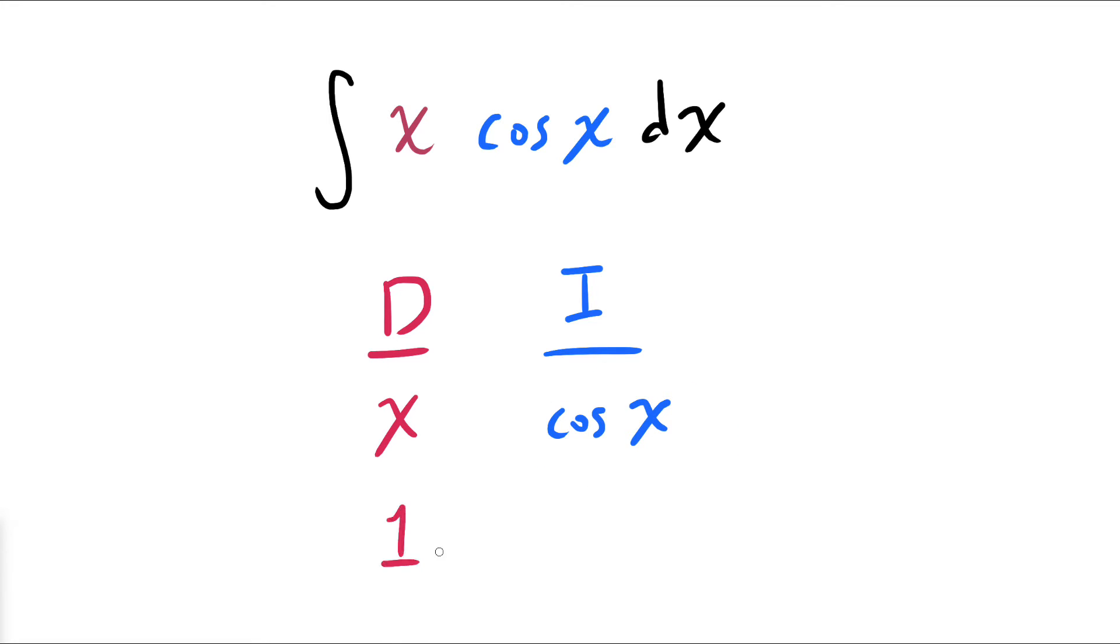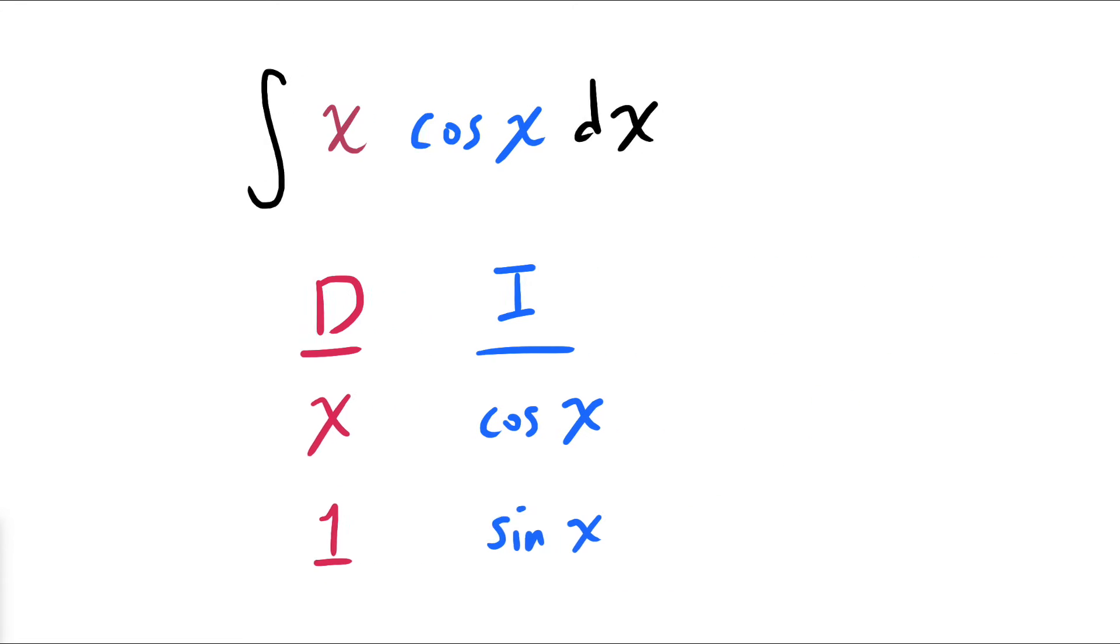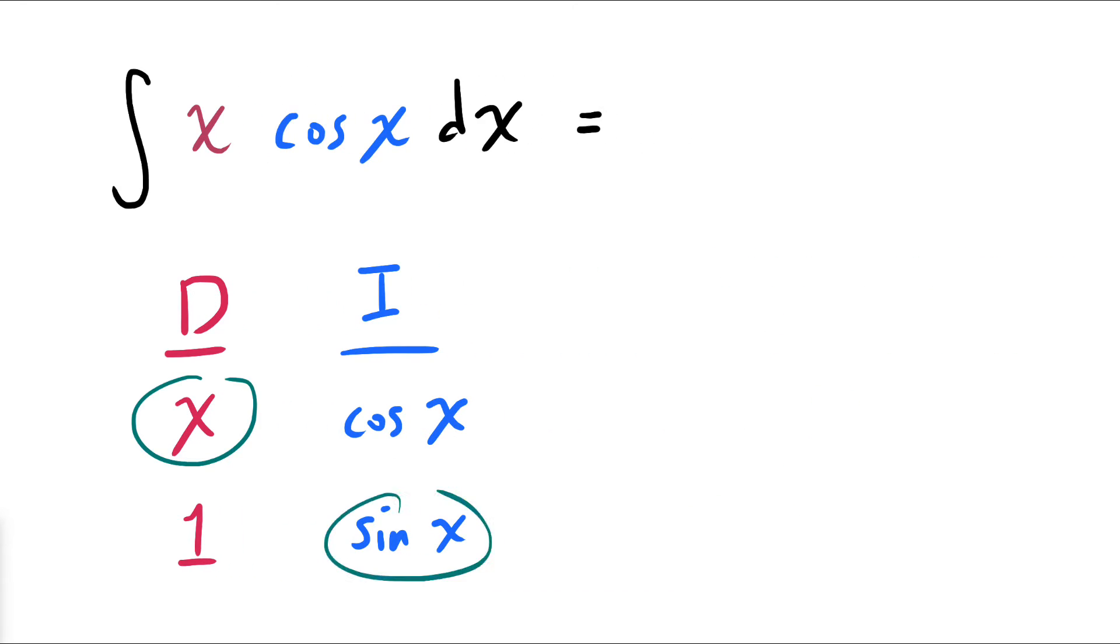Now we differentiate x, we integrate cosine of x, and generally we want to set it up such that when I multiply these two things, then we know how to integrate this. Now we multiply the top left and bottom right entries of the table,